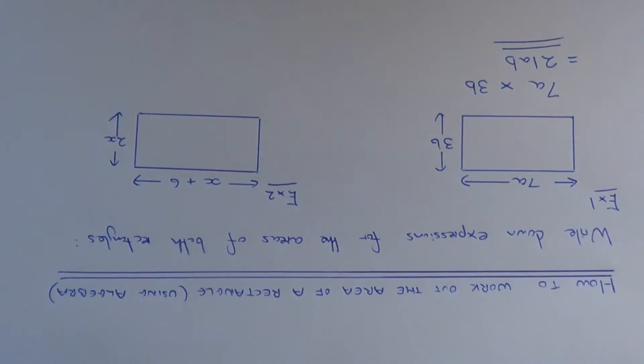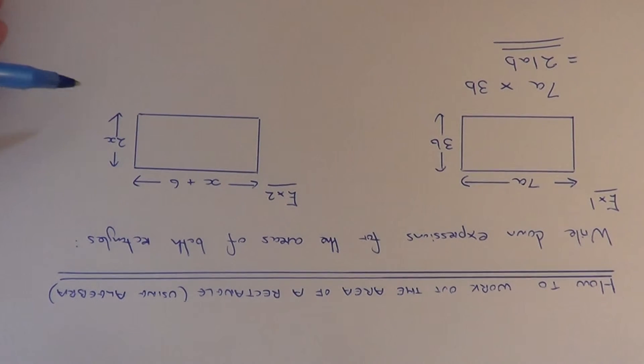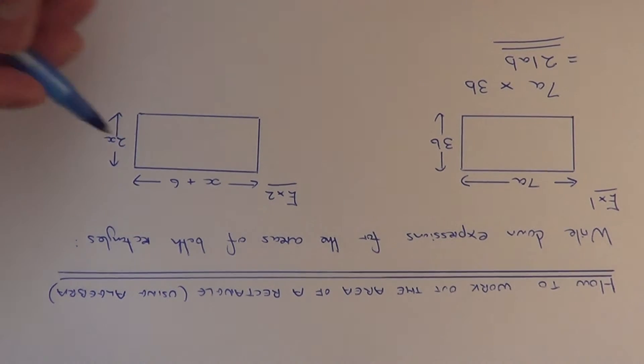Let's move on to example 2. This time the two sides are x plus 6 and the width is 2x. Again, we just need to multiply the length and the width together.